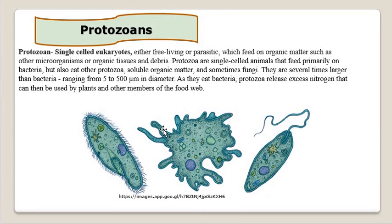Protozoans are single-celled eukaryotic organisms that are either free-living or parasitic. If they are free-living, they feed on existing organic matter in the environment — such as other microorganisms, organic tissues, or organic debris in soil or water. Protozoa are single-celled animals that feed primarily on bacteria, but also on other protozoans, soluble organic matter, and sometimes fungi.